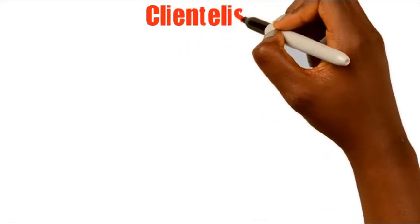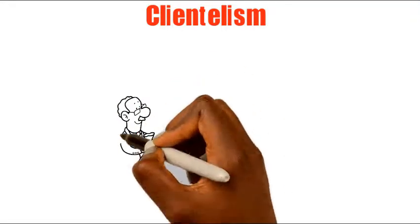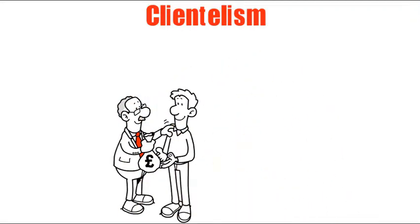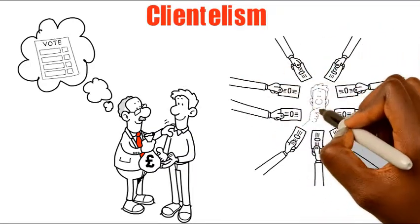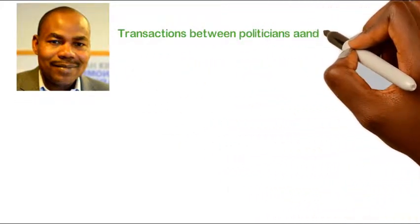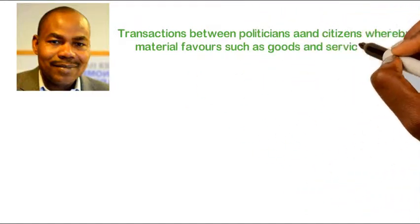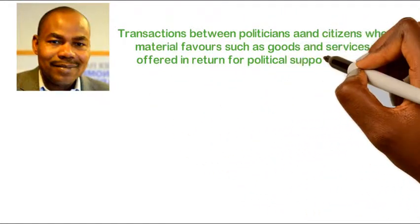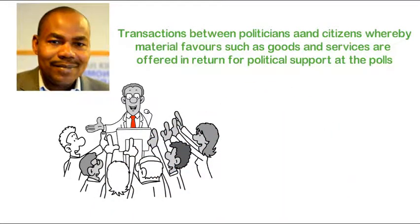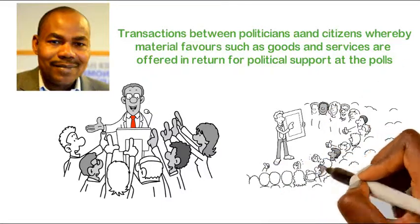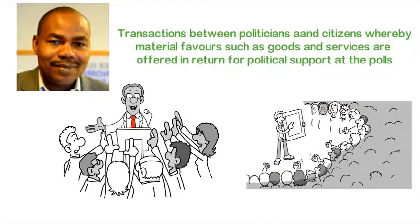Scenario 6 touches on a key concept of corruption known as clientelism. A candidate for a municipal chief executive MCE position promises a voter money or a job in the municipality if he or she votes for him. Vote buying is a typical example of clientelism. Leonard Wanchikon, a professor of politics in 2003, defined clientelism as transactions between politicians and citizens whereby material favors such as goods and services are offered in return for political support at the polls. It is an unequal exchange of favors where the powerful candidate is exploiting the weaker voters.